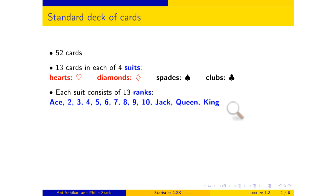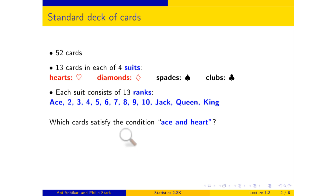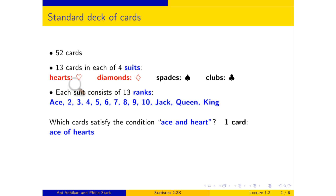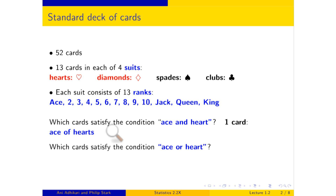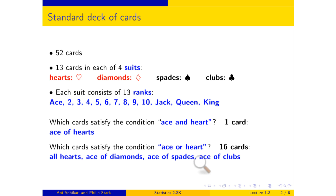We're going to start talking about conditions that cards satisfy, just to get used to looking at events. If we look at the cards that satisfy 'ace AND heart' — how many cards are both aces and hearts? Just one: the ace of hearts. It's got to be hearts and it's got to be an ace, so there's only one of them. If you look instead at which cards satisfy 'ace OR heart,' now it's a bigger set. I counted 16. Hearts are fine — how many of them are there? There are 13.